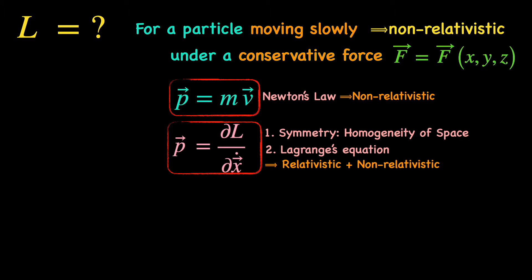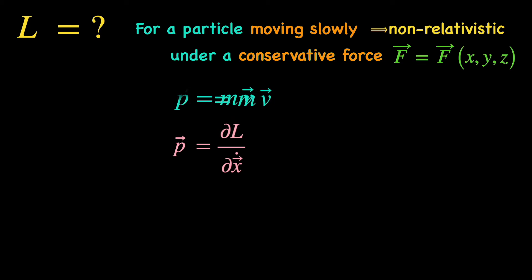So, the natural question to ask is, what should be the form of the Lagrangian L of a non-relativistic particle so that the general definition of momentum, that is del L del X dot, can produce P equals M times V?